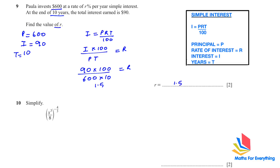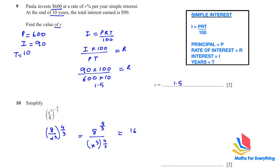Question 10: simplify — an indices question. Whenever you have a negative power, flip what is inside to make it positive. The outside power applies to both terms inside the bracket: for 8 to the power of 4/3, put it in the calculator to get 16. For x, if there's a bracket you multiply the powers, so 3 multiplied by 4/3 gives x to the power of 4.